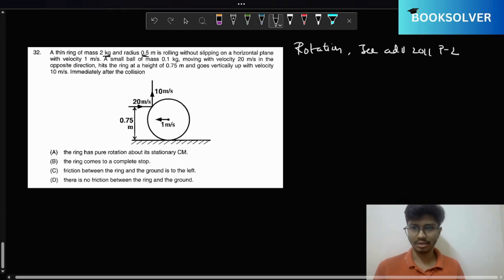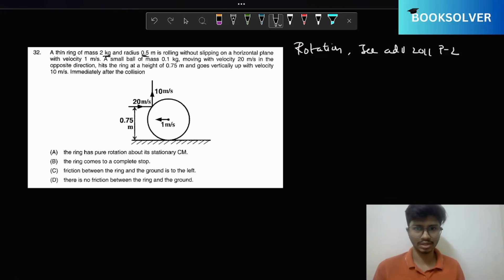A small ball of mass 0.1 kg which is moving with velocity of 20 meters per second in the opposite direction hits the ring at a height of 0.75 meters and goes vertically up with velocity. Immediately after the collision, the ring has pure rotation.